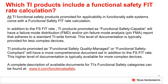All TI functional safety products promoted for applicability in functionally safe systems come with a functional safety fit rate calculation. In addition to the functional safety fit rate, TI products promoted as functional safety capable will have a failure mode distribution and/or pin failure mode analysis, also known as a pin FMA report, that adheres to a standard TI-wide format. This level of documentation is typically provided for less complex devices. TI products promoted as functional safety quality managed or functional safety compliant will have a more comprehensive document set in addition to the functional safety fit rate, and this higher level of documentation is typically available for more complex devices. A complete description of available documents for TI's functional safety categories can be found at www.ti.com/functionalsafety.